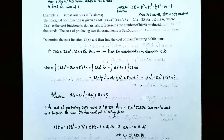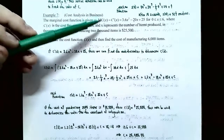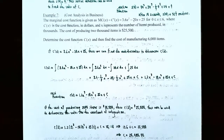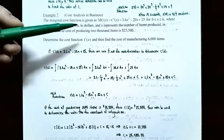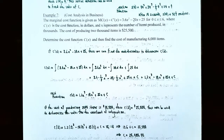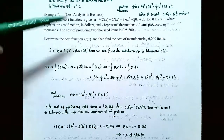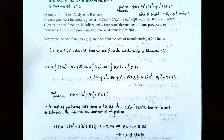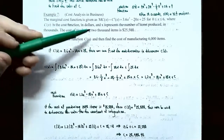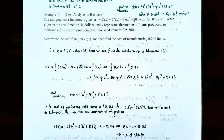That was an example from physical sciences. Now let's talk about an application from business. Example 7: cost analysis in business. The marginal cost function is given as MC(x), or C′(x) = 3.6x² − 20x + 25, where 0 ≤ x ≤ 6, C(x) is the cost function in dollars, and x represents the number of items produced in thousands. The cost of producing 2,000 items is $25,500. Determine the cost function C(x) and find the cost of manufacturing 6,000 items.